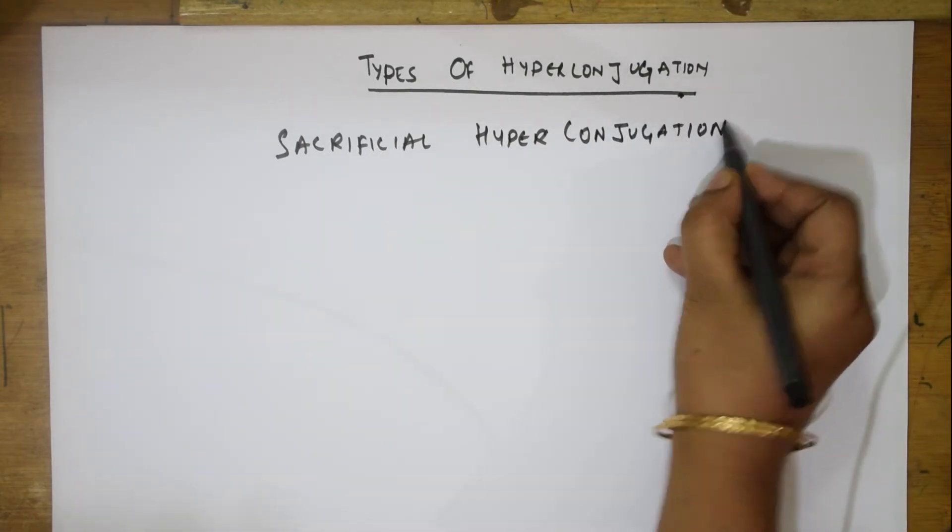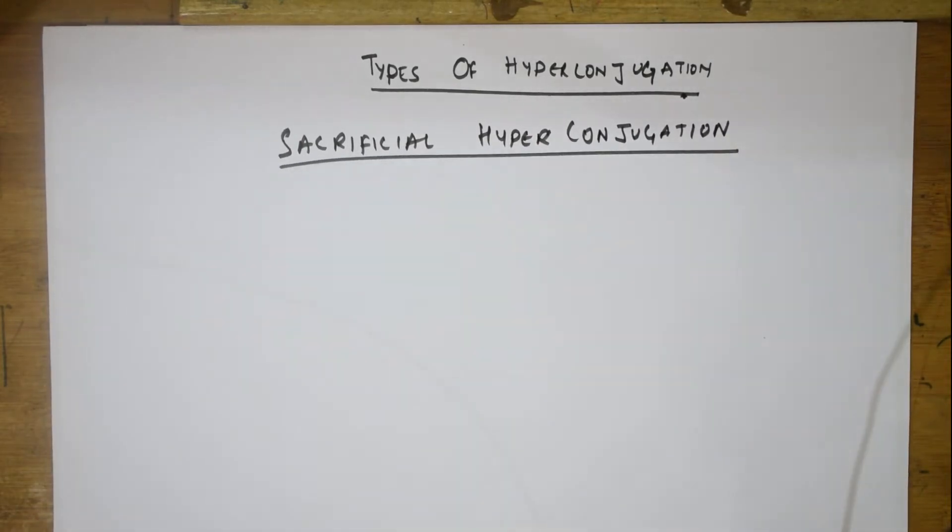In sacrificial hyperconjugation, what will happen, we will see. The essential condition is that the attachment of alkyl groups to double bond or triple bond. That is actually the most important condition.